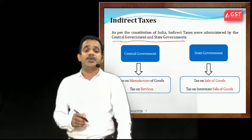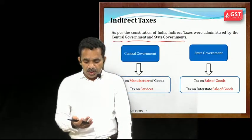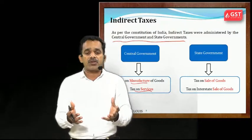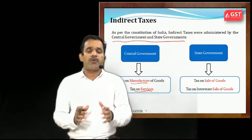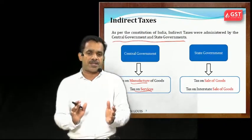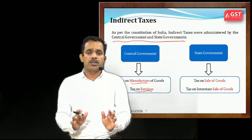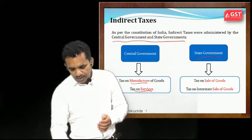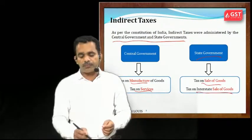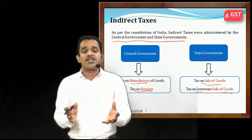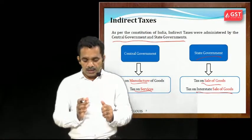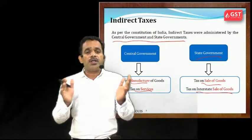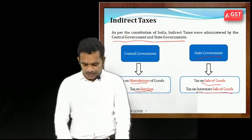Indirect tax is governed by central and state governments. Before GST, the central government was levying tax on manufacture of goods — called Central Excise Duty — and on services, called Service Tax. Both were collected by the central government. State governments dealt with sale of goods — Value Added Tax (VAT) — and interstate sale of goods, on which Central Sales Tax (CST) was applicable.